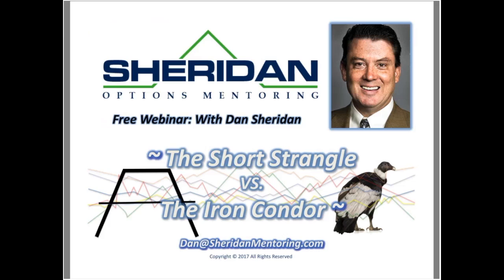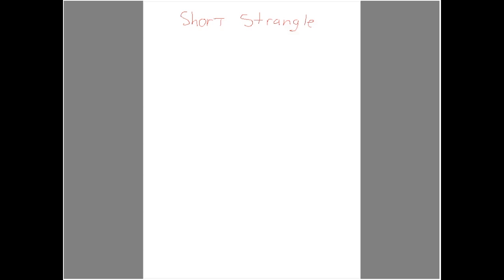Welcome everybody to the webinar today. We're going to talk about the short strangle versus the iron condor. A short strangle is a very simple strategy. If SPX is at 2350, a short strangle would be — let's say — sell one April 2190 put and sell one April 2430 call, about 45 days out.